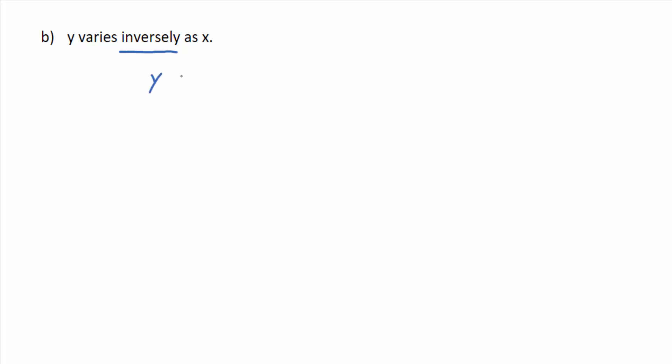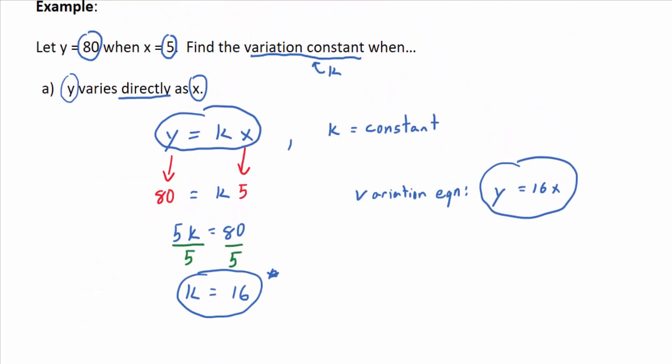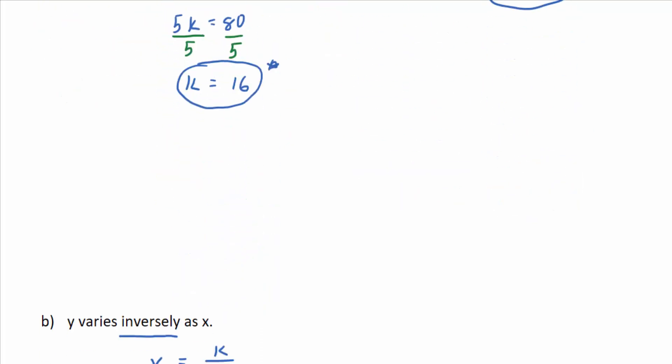So write that down right away. Y equals k divided by x. And then you know from the given, you know that x is equal to 5 and y equals 80. Those are measurements that you know.